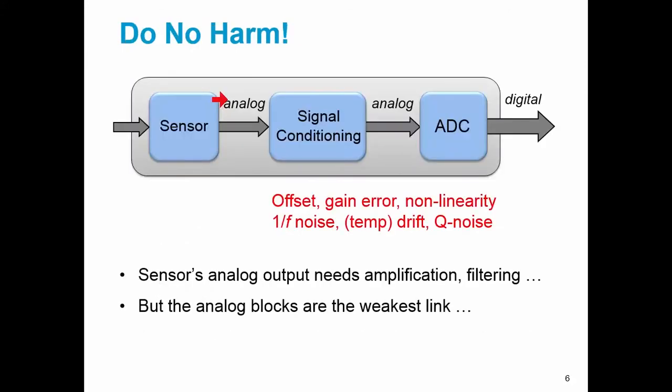So let's consider these maxims in more detail. I spoke about doing no harm. Well, if you look at the block diagram of a smart sensor, you'll see that you have the sensor which produces an analog signal. This analog signal is usually weak, maybe noisy, and it needs to be conditioned. After conditioning, the result will be another larger or higher quality analog signal which you would then pass to an ADC where it would be converted to digital. But if you look at what could go wrong in the signal processing chain, you'll quickly realize that it's the analog signal conditioning that could cause problems because analog circuitry can induce offset, gain error, non-linearity, one over F noise, etc. So the analog blocks are actually the weakest link.